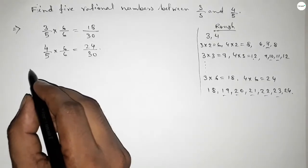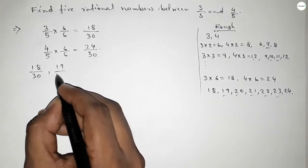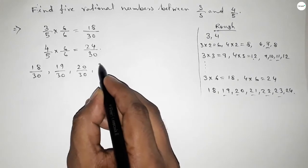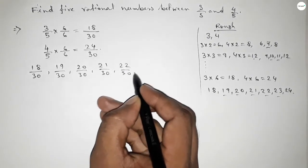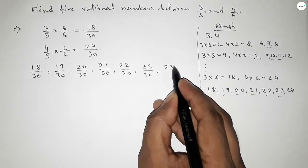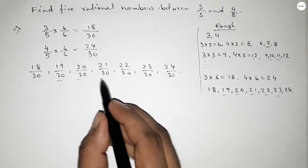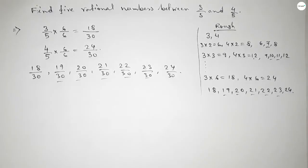We know that between 18 to 24 we get 5 natural numbers. By these natural numbers we can form all the rational numbers, and among these rational numbers, these are the required 5 rational numbers.